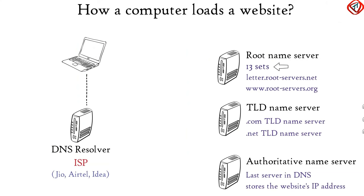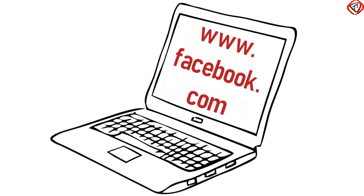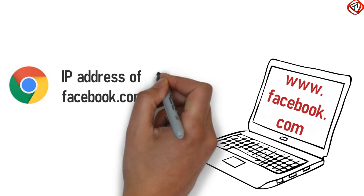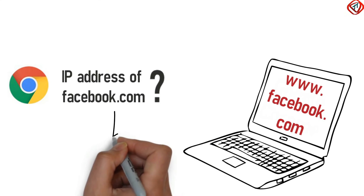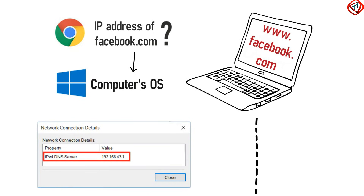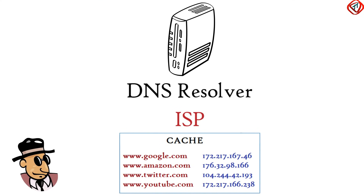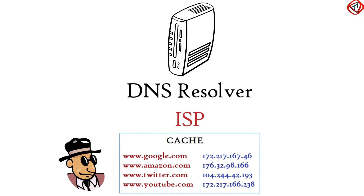Now, how does a computer load a website? Suppose we type facebook.com in the web browser. Since the web browser needs an IP address, it forwards the query to the computer's operating system. Operating systems are configured to forward the query to the DNS resolver, so the operating system then contacts the DNS resolver.